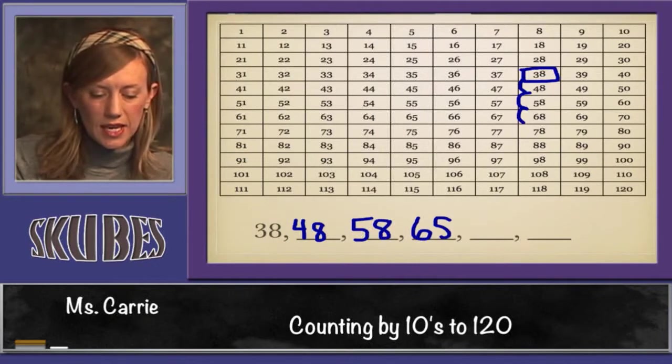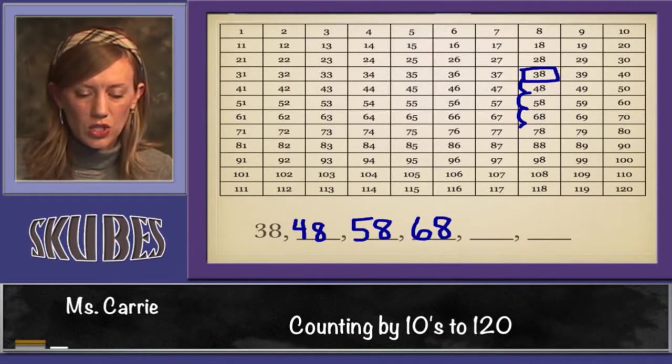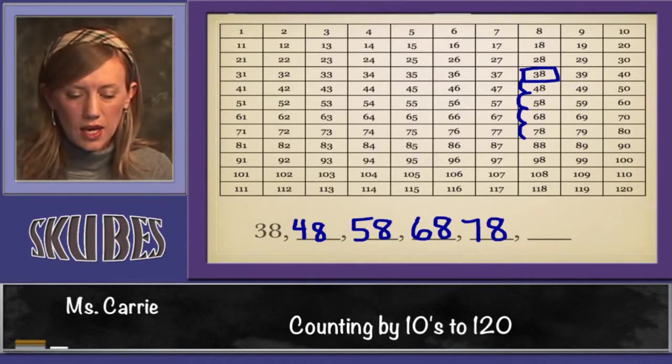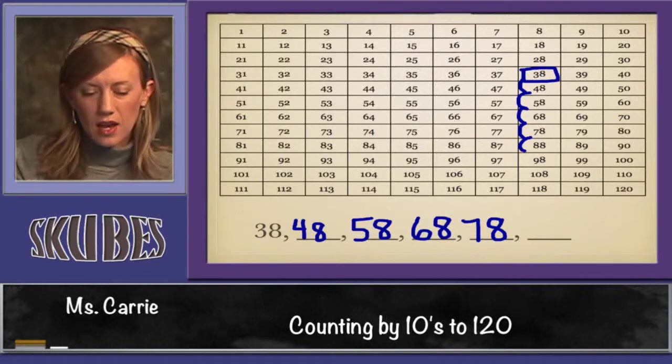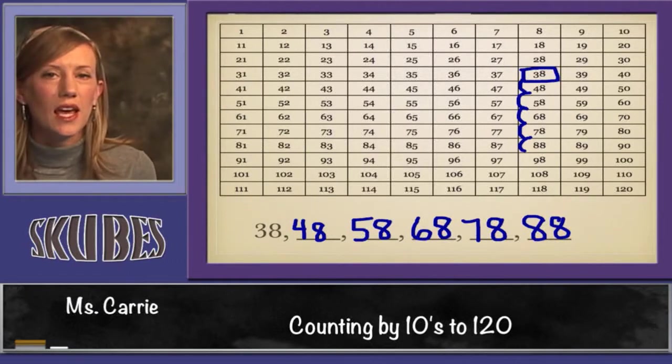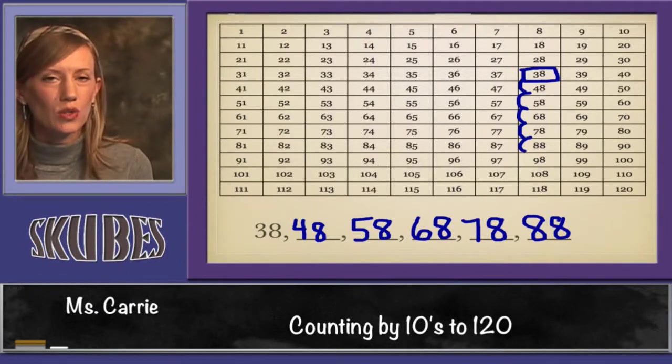We jump down again and add 10, and we're at 78. And we jump down again, add 10, and we're at 88. That concludes our lesson today on counting by tens to 120.